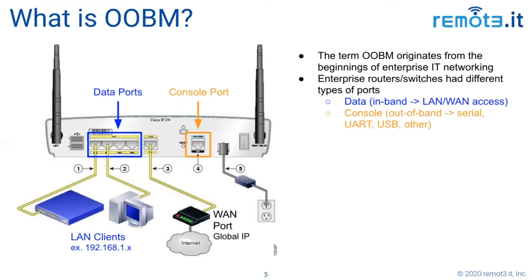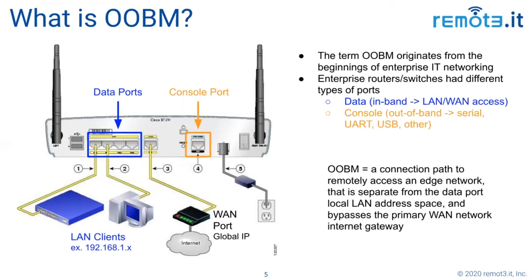Even today, Cisco routers have console ports considered out-of-band. For the purposes of this demo and for Remote.it, we'll think of out-of-band management as a connection to a remote network that allows us to remotely access it, but the connection path is separate from the data port local LAN address spaces, and we're also bypassing the primary WAN gateway at the edge network.